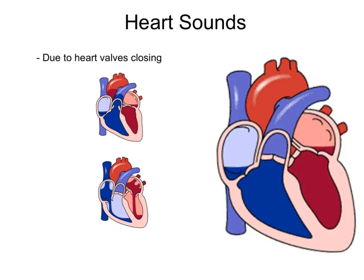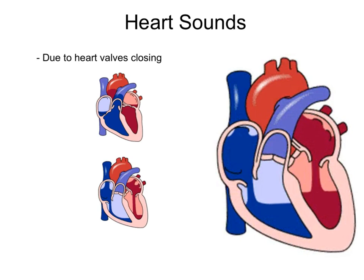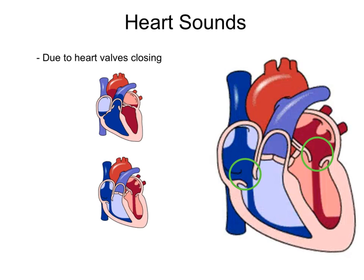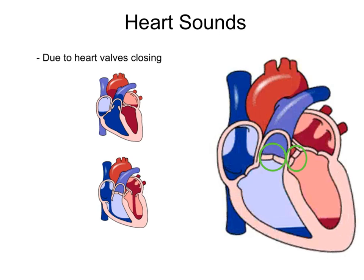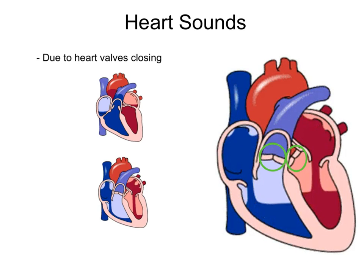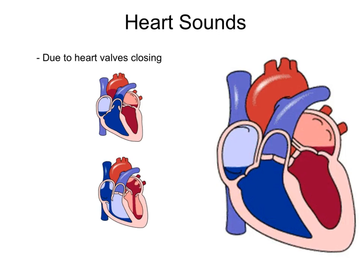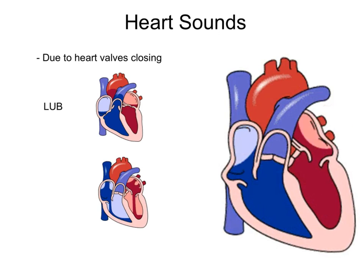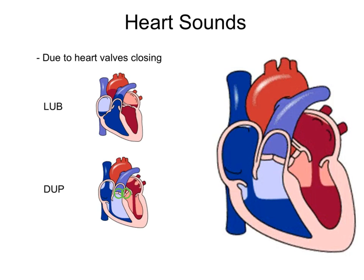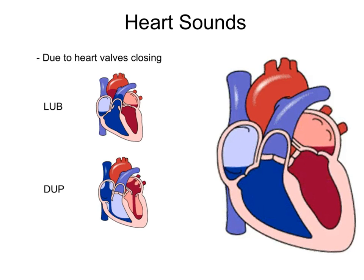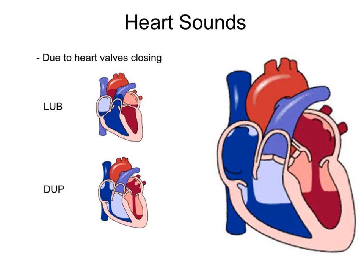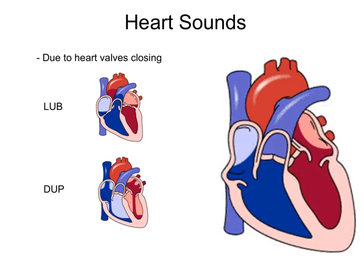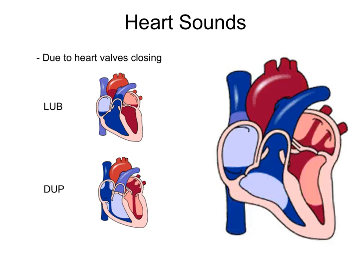Heart sounds are due to the heart valves closing. There are two types of heart valves: the atrioventricular valve, found between the atria and the ventricles, and the semilunar valves, found between the ventricles and either the pulmonary trunk or the aorta. The first heart sound is due to the atrioventricular valves closing — we call this lub. The second heart sound is due to the semilunar valves closing — we call this dup. So when you hold a stethoscope up to your heart, you're hearing lub-dup, and this is due to the cusps of the valves slapping against one another while they're closing.